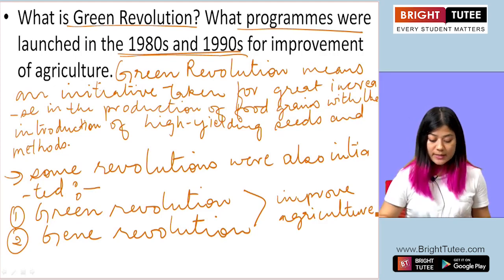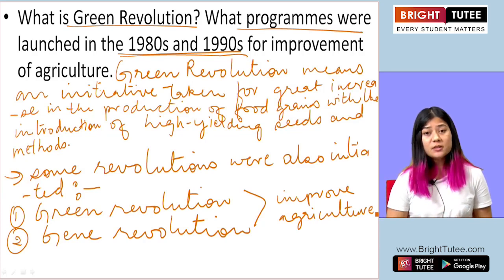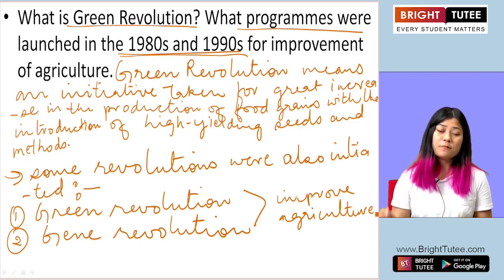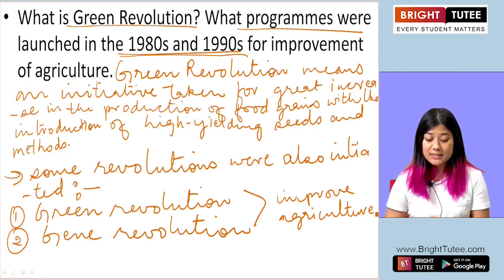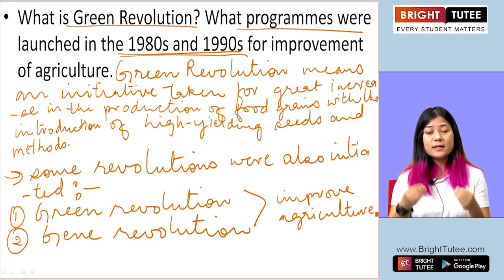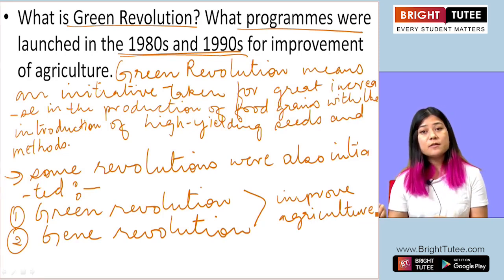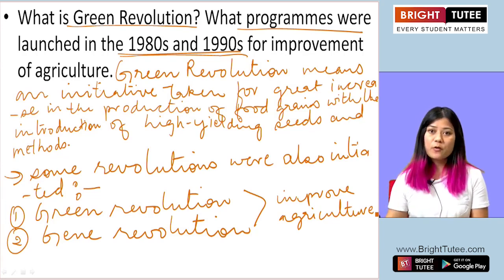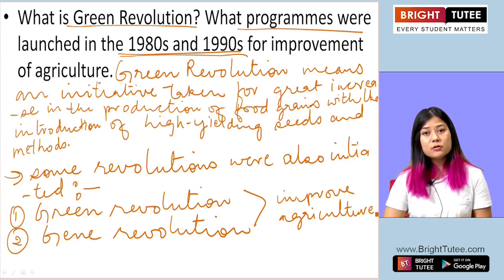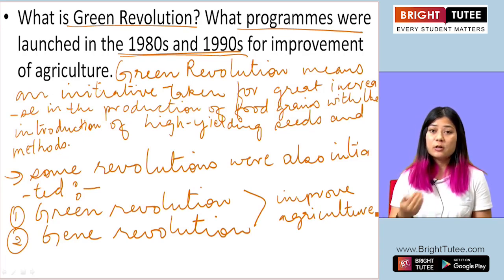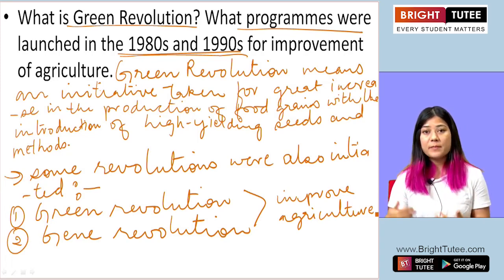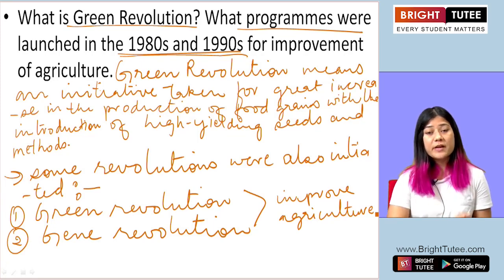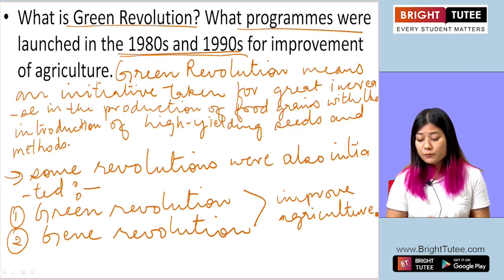With this we have come to the end of this chapter on agriculture. We looked at various types of agriculture, various types of farming, the cropping seasons — three kinds of cropping seasons — various individual crops and their cultivation requirements, and also some of the reforms or changes required for the development and growth of agriculture.